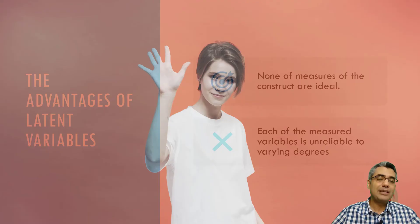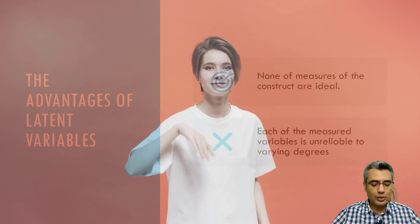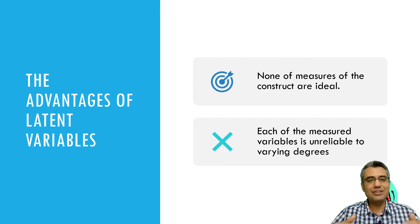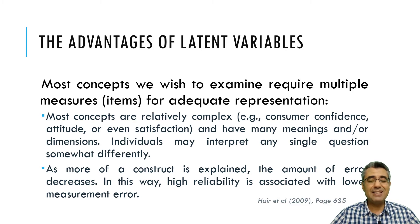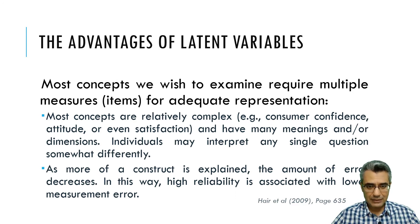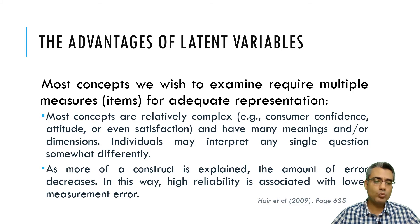For example, for life satisfaction you may use five questions — meaning you are using five thermometers. Each may have some measurement error, so by increasing the number of items, you reduce measurement error and increase reliability. Most concepts we wish to examine require multiple measures because most concepts are complex — like consumer confidence, attitude, satisfaction, and quality of life — and they may have different dimensions. Individuals may interpret each question differently, so we use several items to reduce this variation. As more of a construct is explained, the amount of error decreases, and high reliability is related to lower measurement error.